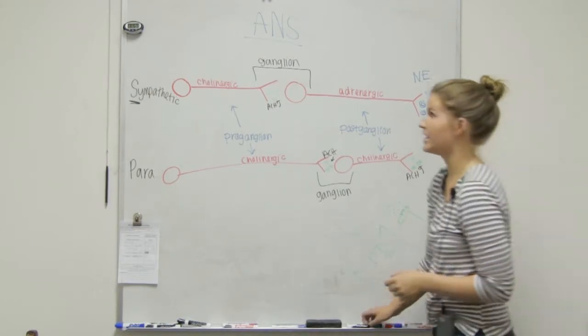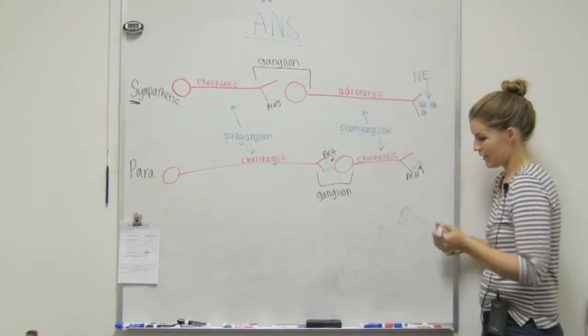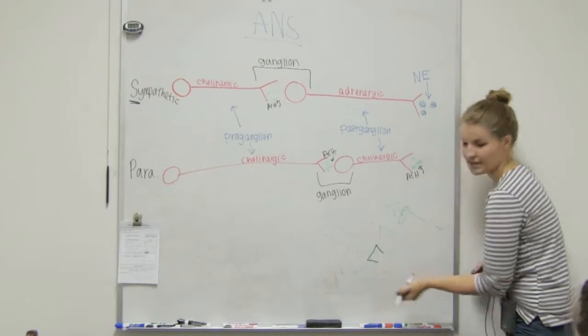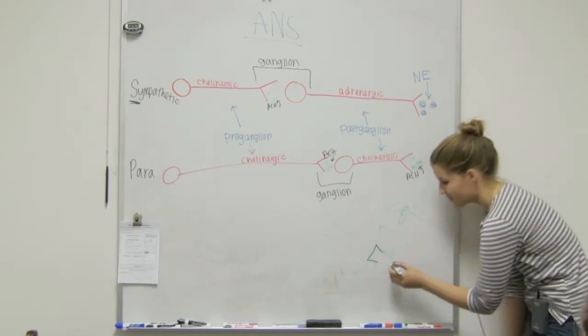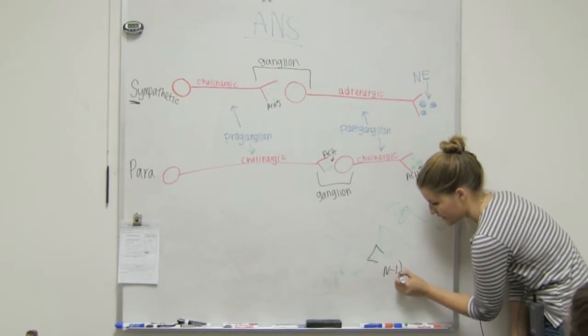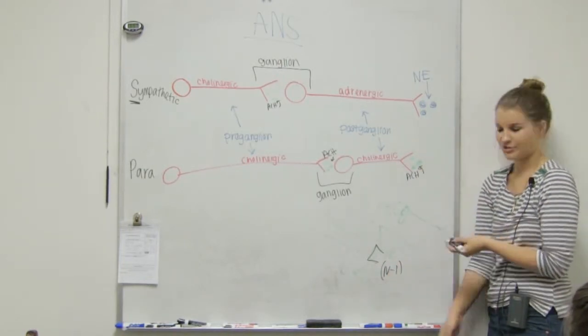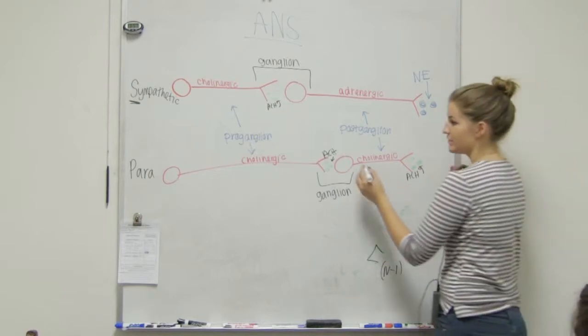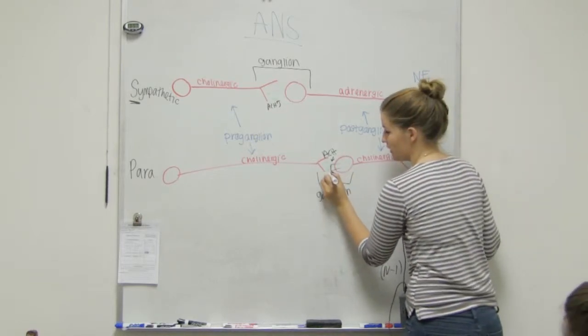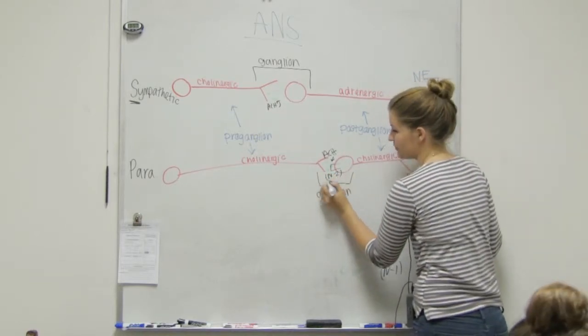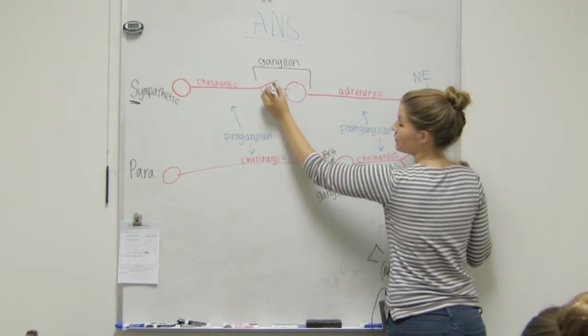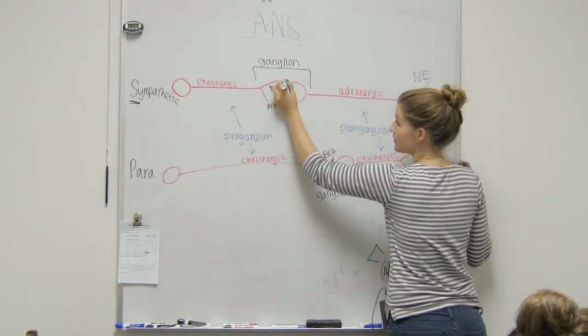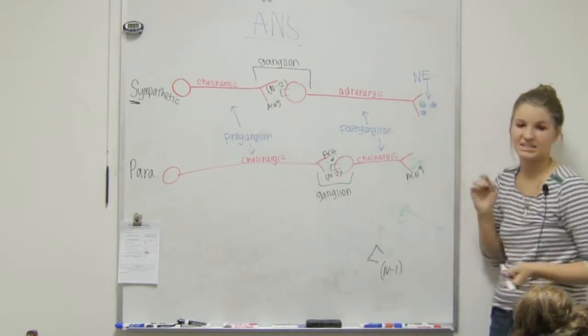And then we have certain receptor sites, right? So, just like here, it was a sodium ligand gate. We actually also call that an N1 receptor. Just so you have something to compare it to. The receptors here, we call it an N2 receptor for both preganglionics. That's an N2 receptor. Meaning nicotinic.